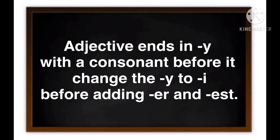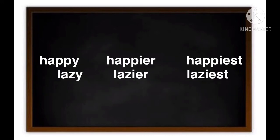But if an adjective ends in Y with a consonant before it, change the Y to I before adding -er and -est. For example, look at the first word: H-A-P-P-Y. The word ends with the letter Y followed by a consonant letter P.